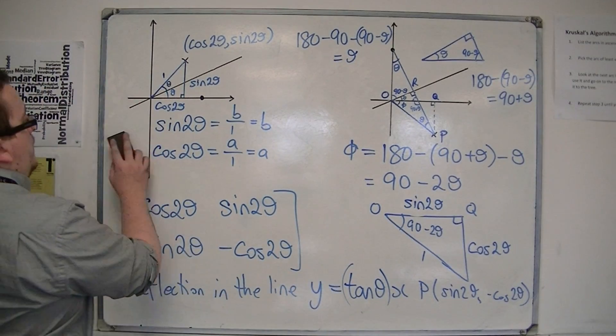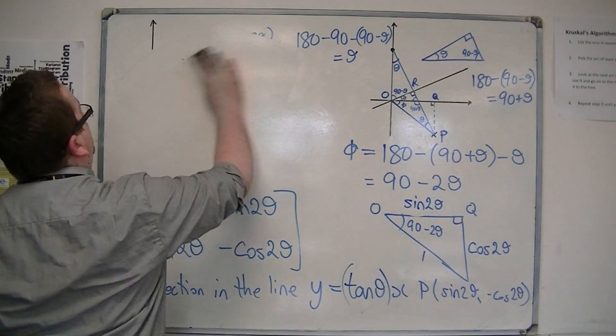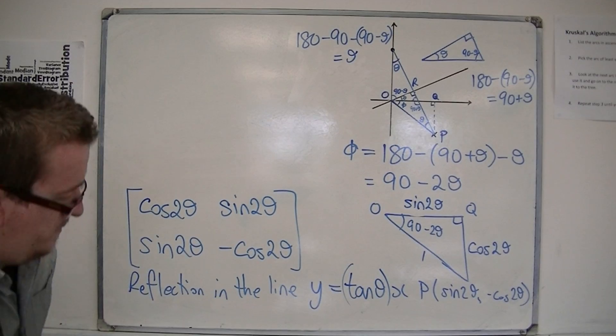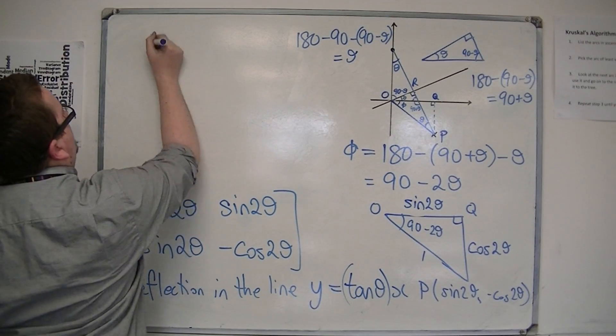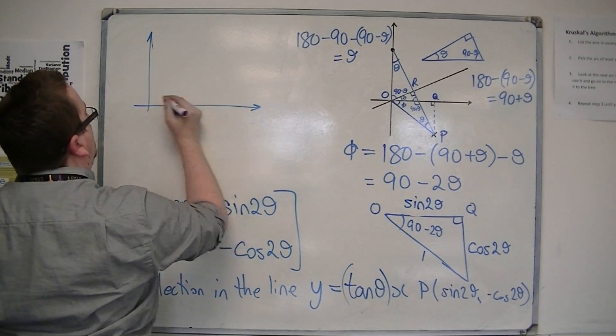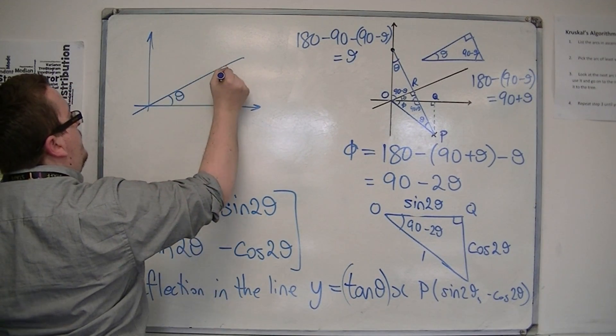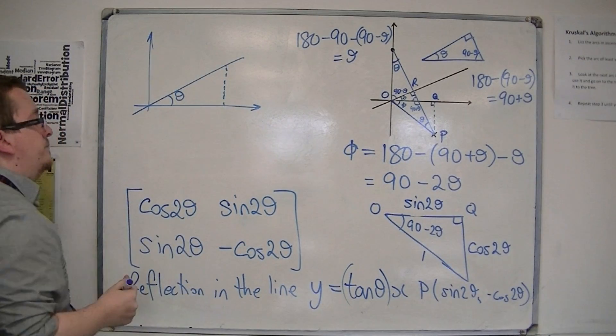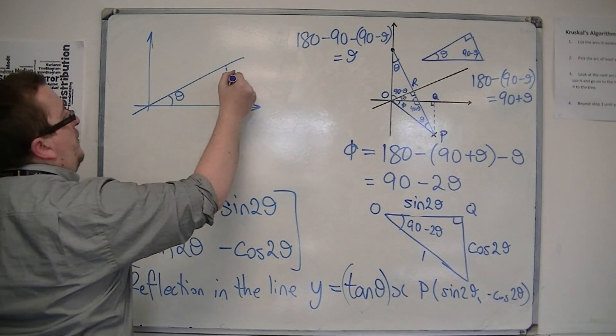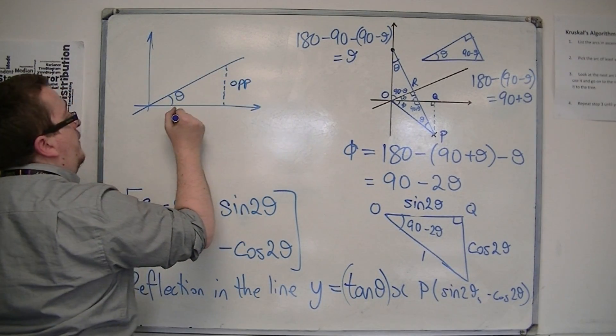So if you're looking at a line like so, and that's your angle theta, then if you just take a point there, that's your opposite, that's your adjacent.